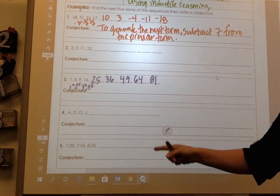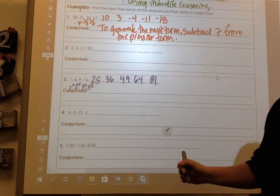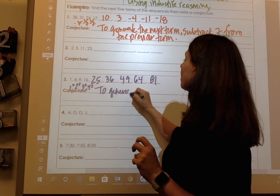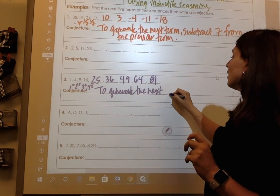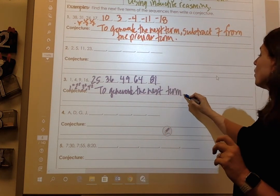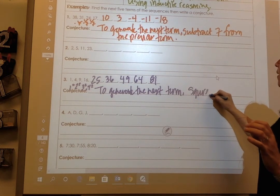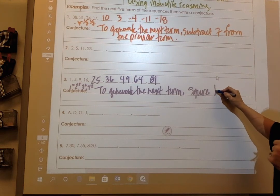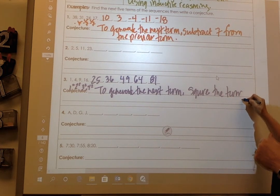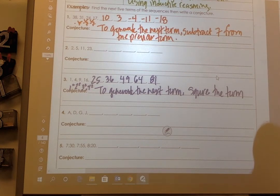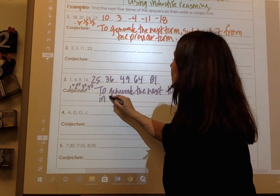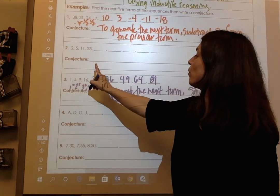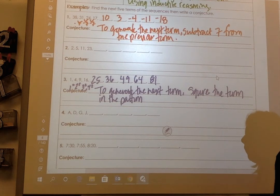So the conjecture here would be to generate the next term, square the term in the pattern. So here's my first one, second one, third one, fourth one, fifth, sixth, seventh, and so on. So there is my conjecture there.